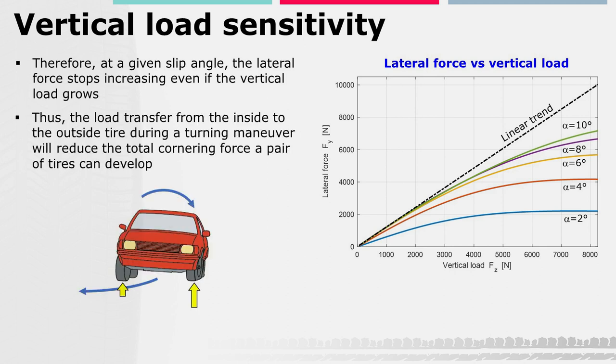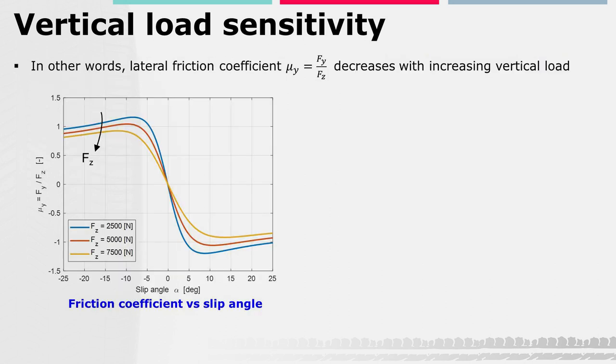Thus, the load transfer from the inside to the outside tire during a turning maneuver reduces the total cornering force that the pair of tires of the same axle can develop. The non-linear trend of the lateral force with the vertical load can be better explained by introducing the lateral force coefficient, or lateral friction coefficient μy, which is obtained by normalizing the lateral force versus slip angle curve with the vertical load. The lateral force is shown in the figure on the left.